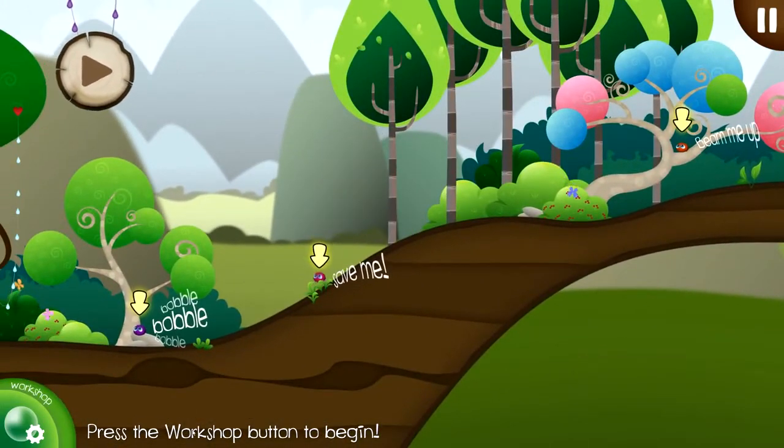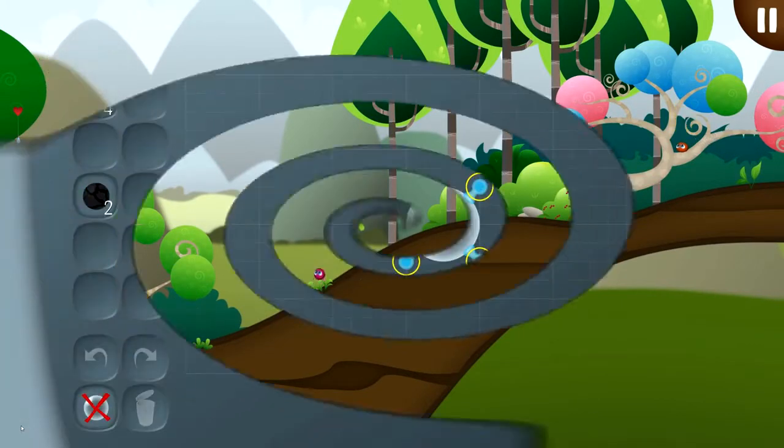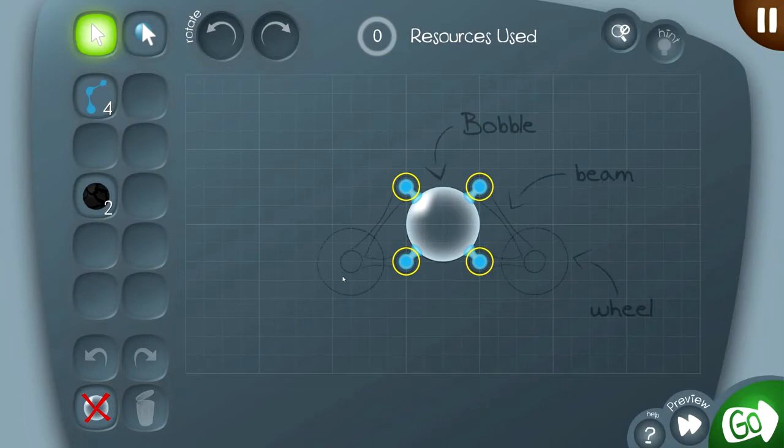Down here, the game's suggesting that we should press the workshop button to begin, so let's do that. This is the workshop where you can build your vehicles. On this first level, we've given you a bit of a suggested template to work around, so I want to explain what a few of these components actually do.